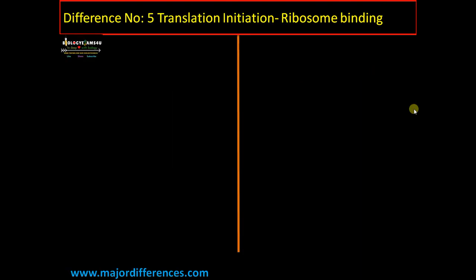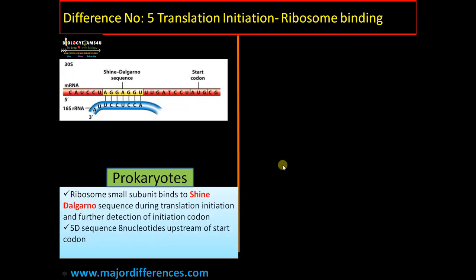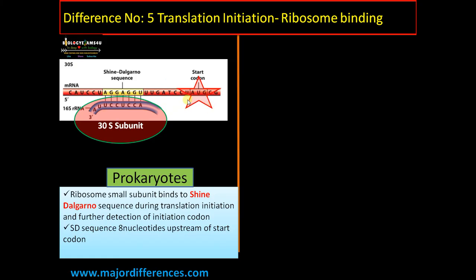Translation can be divided into three steps: initiation, elongation, and termination. Difference number five: translation initiation. During initiation, the ribosome small subunit binds to a specific sequence on mRNA called the Shine-Dalgarno sequence in prokaryotes. The 30S subunit contains 16S rRNA which has a complementary sequence to the Shine-Dalgarno sequence and forms a hydrogen bond with it. The 30S subunit then scans and finds the start codon AUG. The SD sequence is eight nucleotides upstream of the start codon.